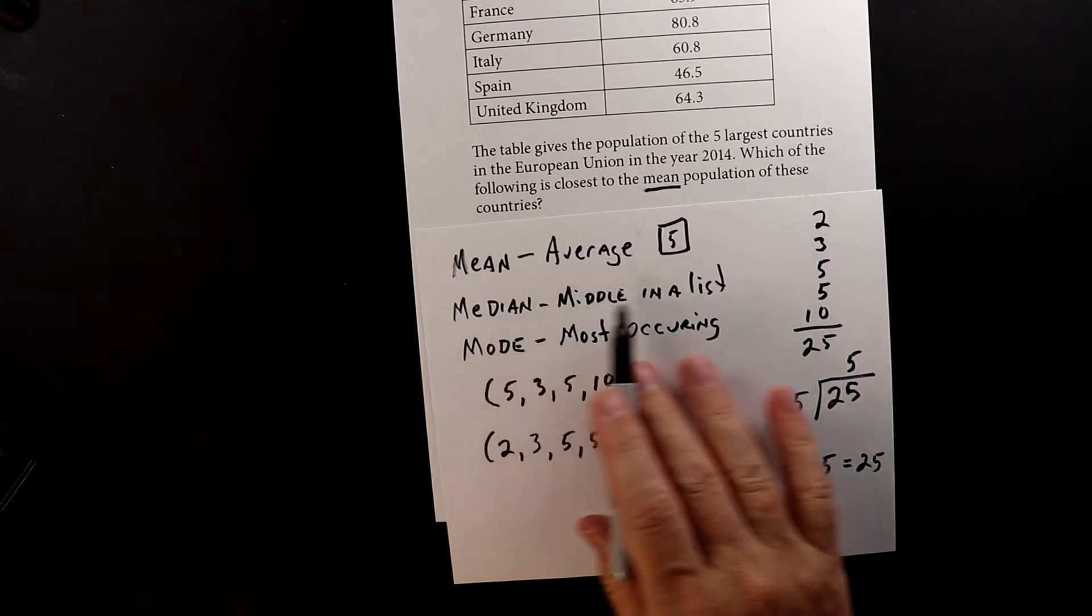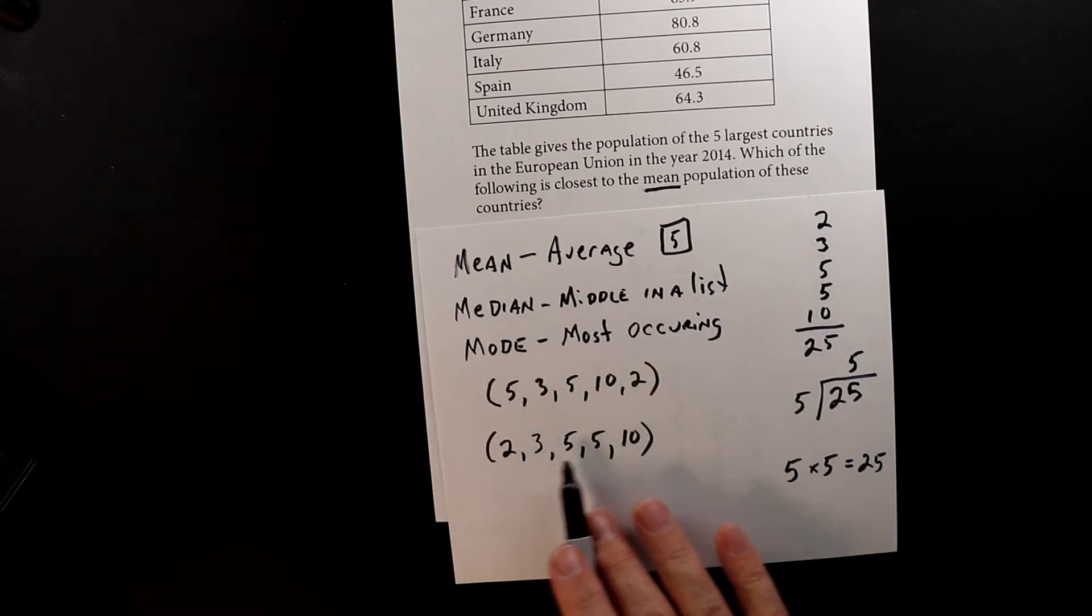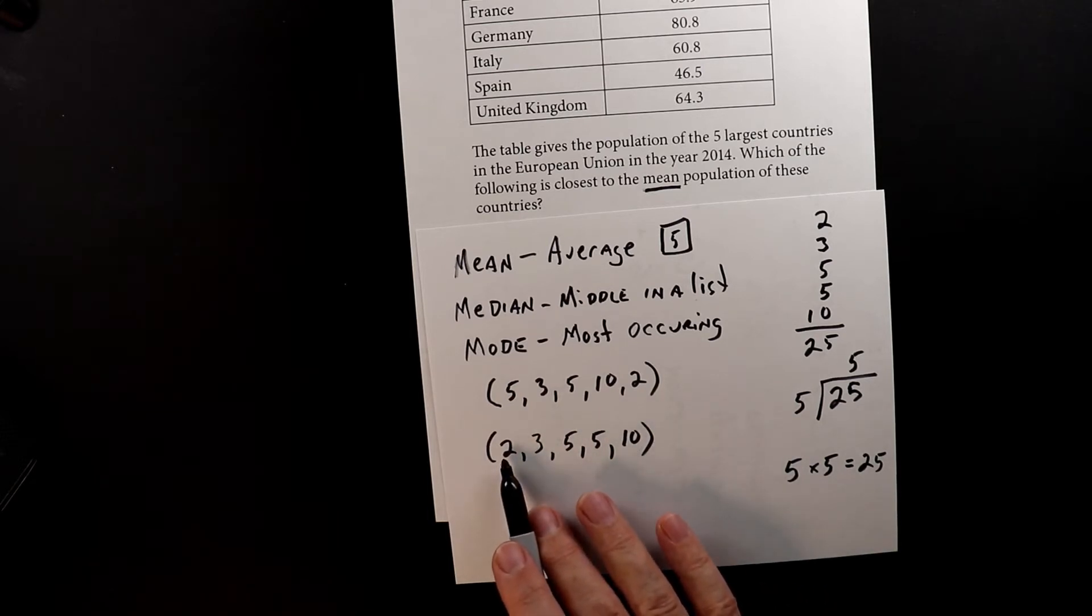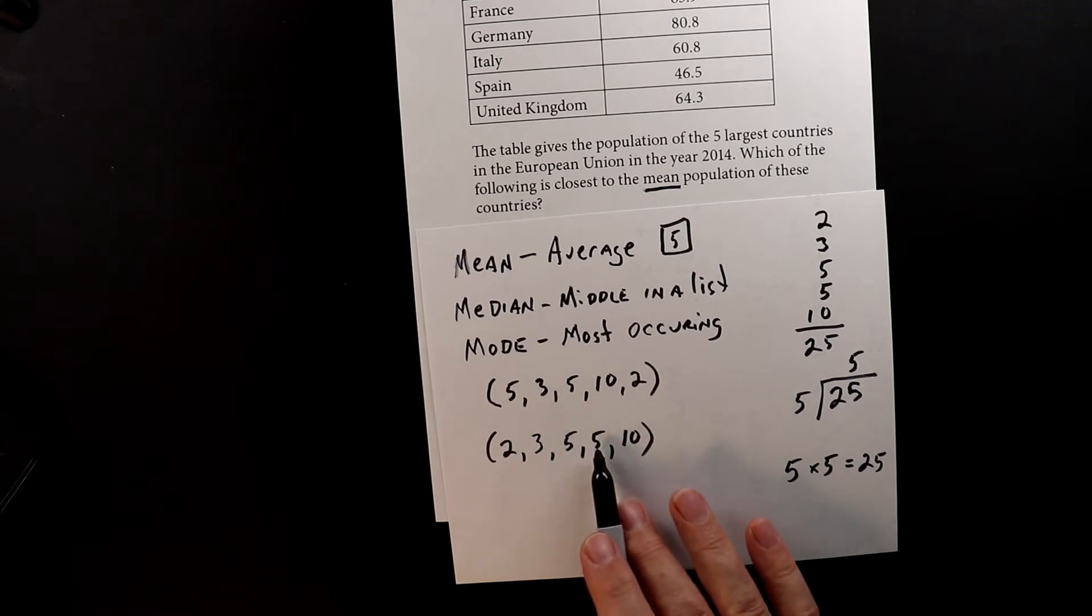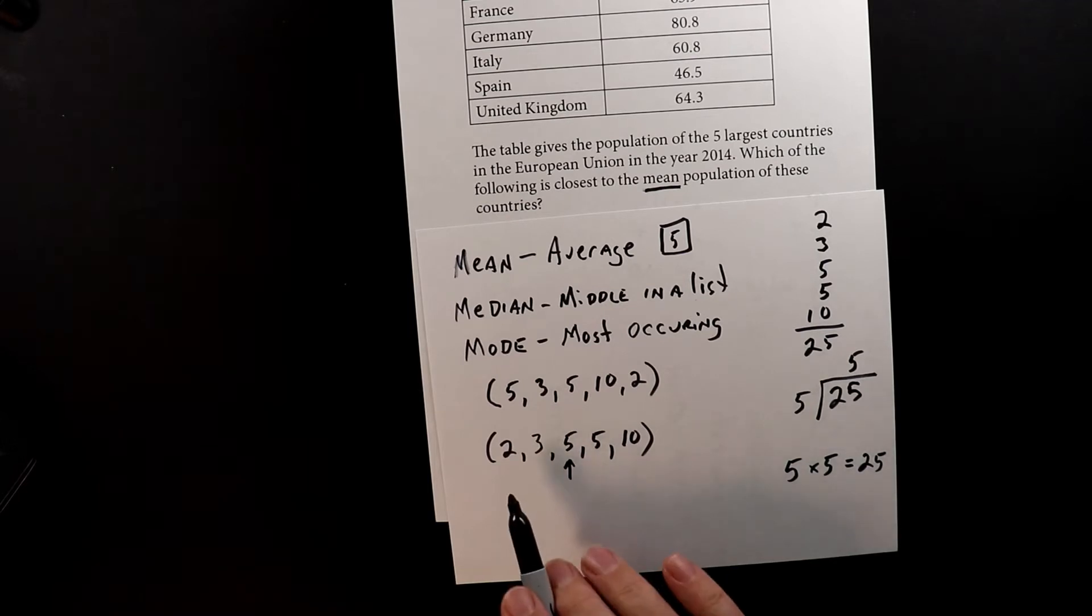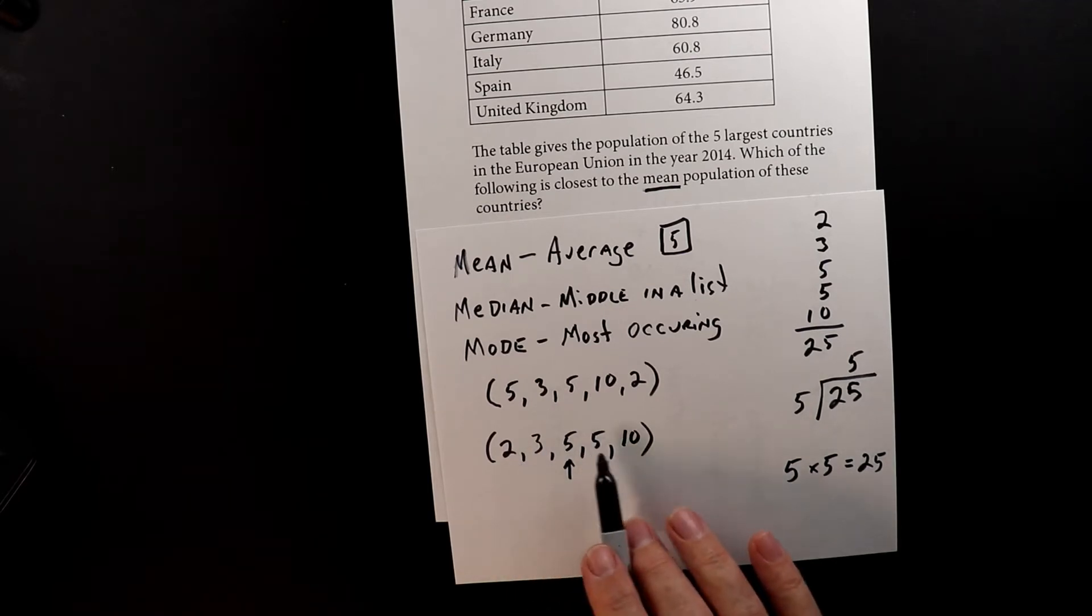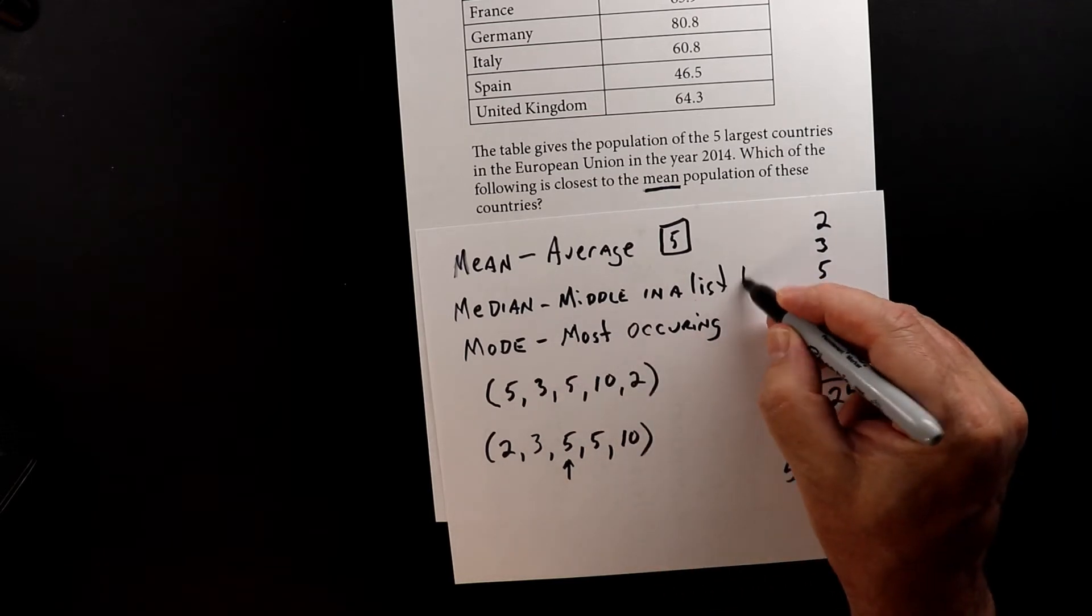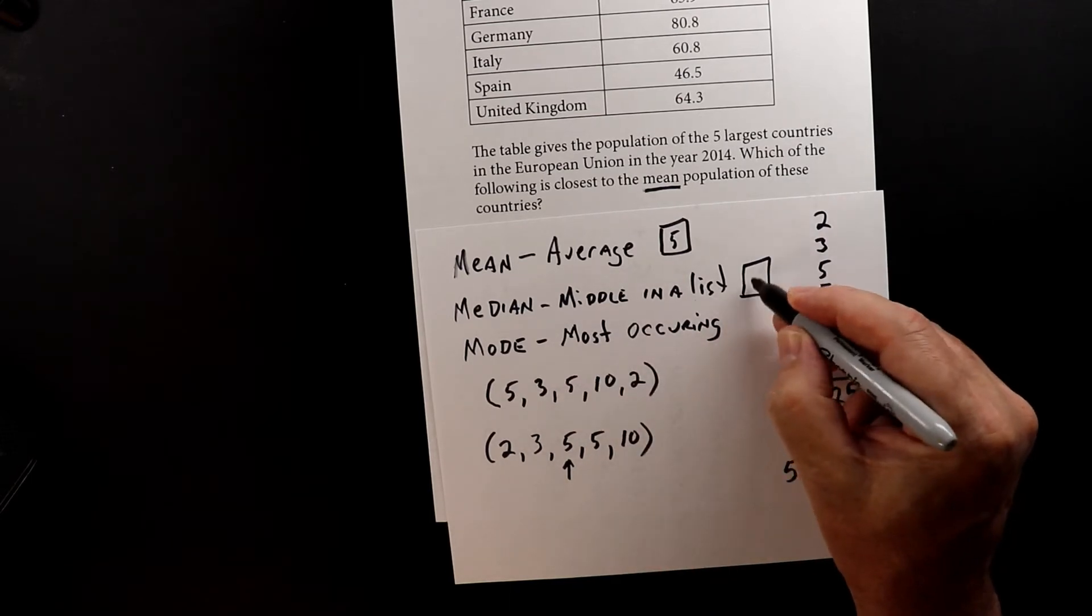Now, the middle of this list, you have to make sure that they're in order from lowest to highest. You count the number and you find the one that's in the middle. So we have one, two, three, four, five. And the middle one is that one. So since we have two on this side, we have two on that side, we know that five is in the middle. So the median is five.